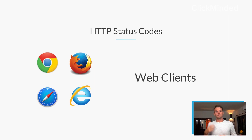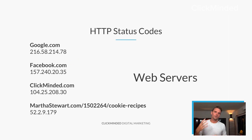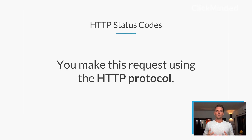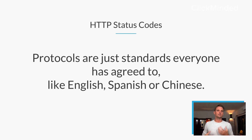Maybe it's Chrome, maybe it's Firefox, maybe it's Safari. If you're a god-forsaken human being, maybe it's Internet Explorer — but you're usually accessing the internet through one of these clients. Whenever you request a website, you're making a request from a web server. You make a request, and the server responds. That's happening every single time you're clicking a link. You make this request using what we call the HTTP protocol. Protocols are really just standards that everyone on the internet has agreed to — no different than English or Spanish or Chinese. It's a language that we've all agreed to.